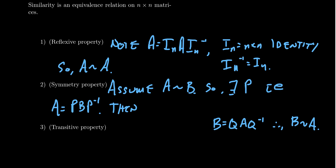Coming back, how does one accomplish that? Notice that if we take P B P inverse — this is going to equal A — we can multiply both sides by P inverse. I'm going to multiply on the left-hand side by P inverse, and on the right-hand side by P. Do be aware that matrix multiplication is non-commutative, so the order in which you multiply does matter. If you want to cancel the P on the left-hand side, you multiply by P inverse, and to get rid of the P inverse on the right-hand side, you multiply by P on the right.